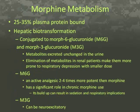Most opioids depend primarily on the liver for biotransformation. Morphine undergoes conjugation with glucuronic acid to form morphine-3-glucuronide and morphine-6-glucuronide, with 90% ultimately eliminated by the kidneys. Twenty-five to 35% of morphine is plasma protein bound. The active metabolite, morphine-6-glucuronide, is an active analgesic 2 to 4 times more potent than morphine and has a significant role in chronic morphine use, as its buildup can result in sedation and respiratory implications. The metabolite morphine-3-glucuronide can be neuroexcitatory. Elimination of metabolites M3G and M6G is by the kidneys, and renal patients may be more prone to respiratory depression with smaller doses.